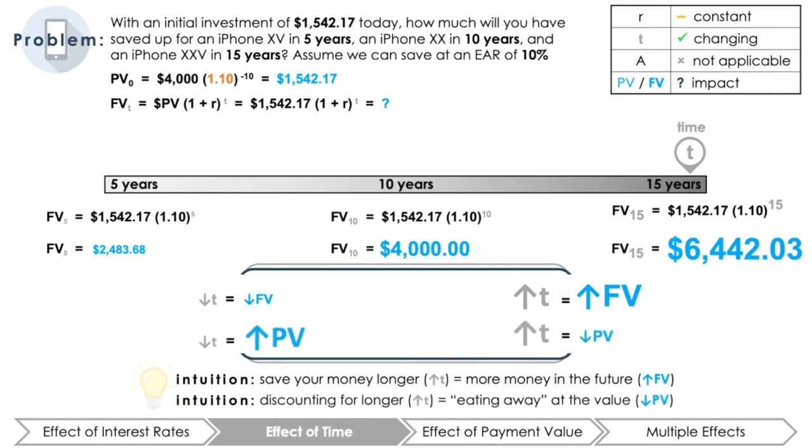discounting cash flows back in time over a longer time horizon means that you're making today's dollar less and less valuable. Imagine that for every period that you discount your money, the time is eating away at its value. Therefore, the time period and present value have an inverse relationship. For the same discount rate and same amount of money, as you discount your money further and further back in time, the less and less valuable your money will be.